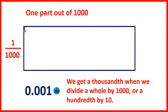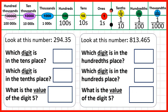You might be able to see this tiny little bit of the rectangle shaded — that's one thousandth, because if we had a thousand of these tiny little blue rectangles, we would have our whole rectangle shaded. So we know that our whole number place value columns are ones, tens, hundreds, thousands, ten thousands, and hundred thousands. When we have ten of something, we can go to the next place value column along: ten ones make one ten, ten tens make one hundred, ten hundreds make one thousand, and so on.